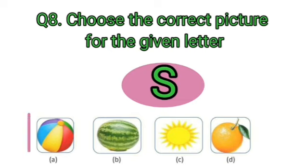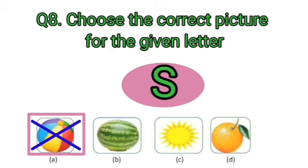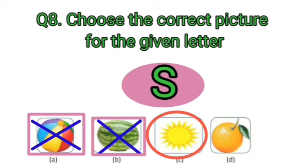The first picture with us is, Ball. No children. This is not. The second option with us is, Watermelon. No. The third option is, yes, Sun.